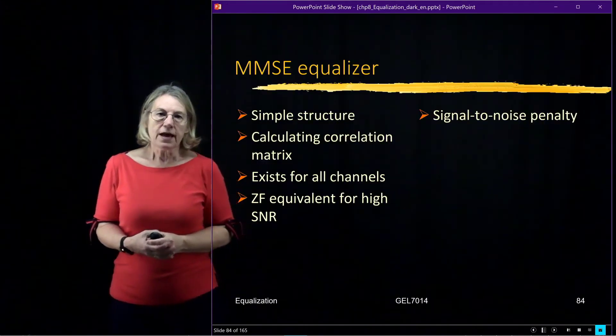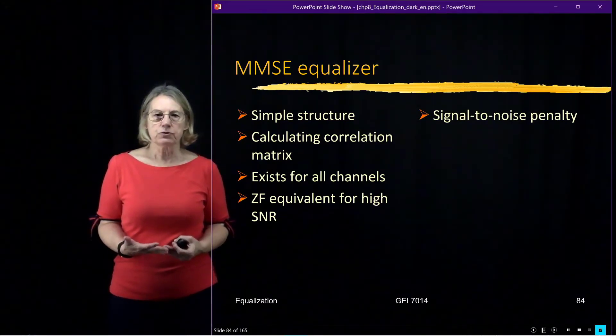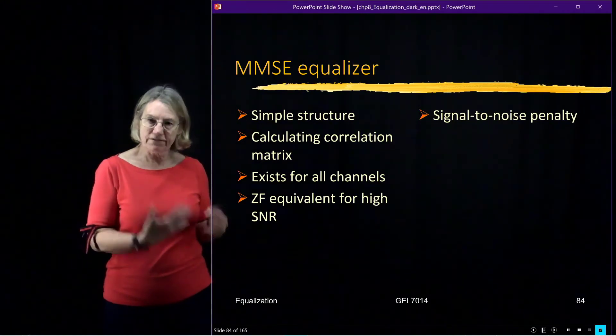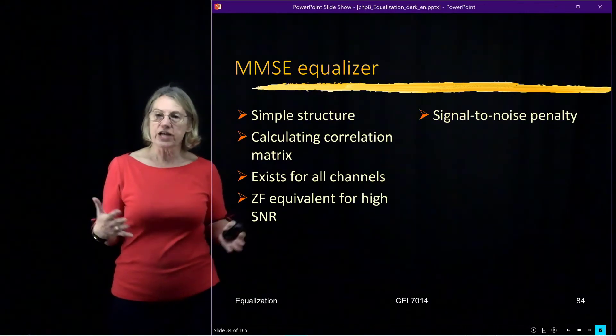So the MMSE equalizer has a simple structure. We have to calculate the correlation matrices in order to find the coefficients of this equalizer. And what's nice is it exists for all channels.